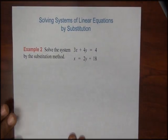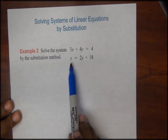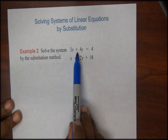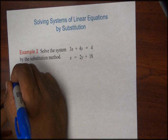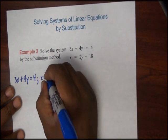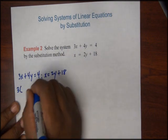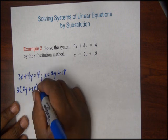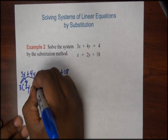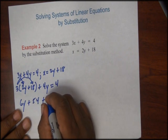Let's take a look at another example. We're asked to solve the linear system by using the substitution method. Notice that one of our equations is already solved for one of its variables, which is x. So I'll take this x-equals equation and substitute it into the 3x plus 4y equals 4 equation. I'll write this out as 3x plus 4y is equal to 4, and wherever I see x, I'm going to substitute that with 2y plus 18. So this is 3 times the quantity 2y plus 18, plus 4y is equal to 4. Now I'll distribute 3.